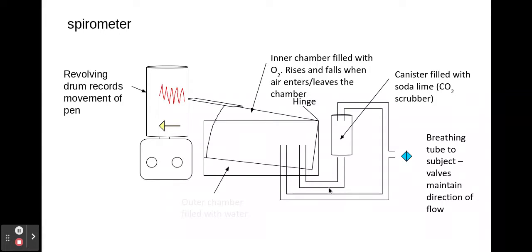Within the spirometer you'll have valves which aren't shown on this diagram. They control the flow of the air in one direction in and another direction out, but it needs to make sure that the air passes over the soda lime.